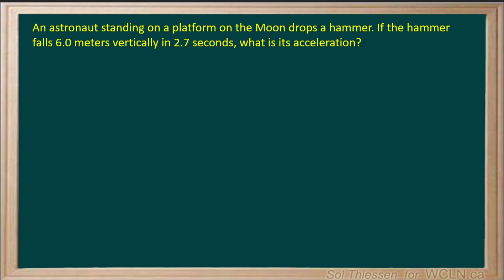An astronaut standing on a platform on the moon drops a hammer. If the hammer falls 6 meters vertically in 2.7 seconds, what is its acceleration?